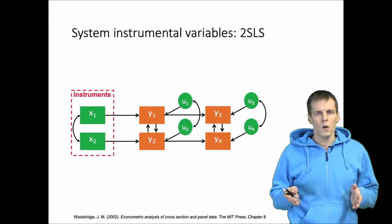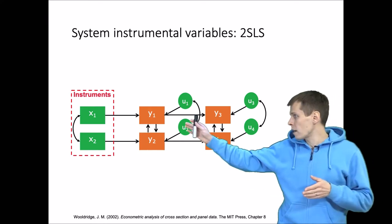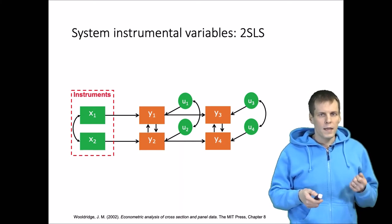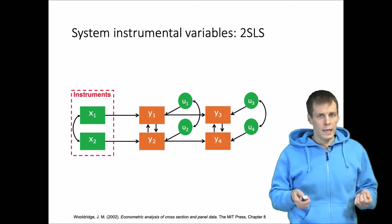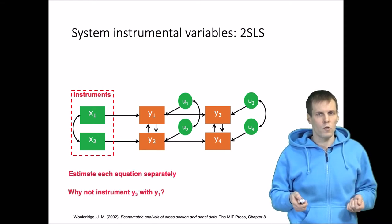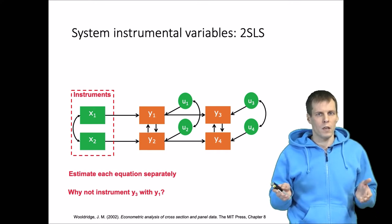So in this case we would use x1 and x2 as instruments, and if we apply two-stage least squares, basically what we do is estimate each equation separately using x1 and x2 as instruments for every equation.